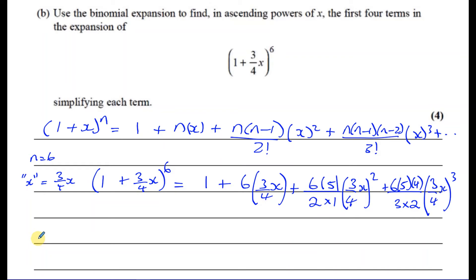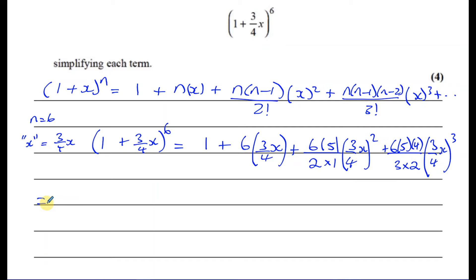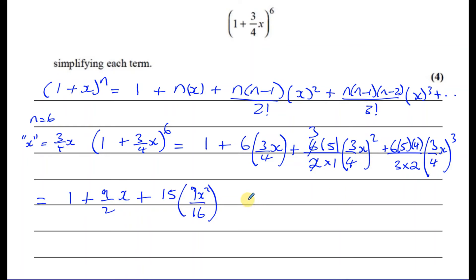The fourth term is (6×5×4)/3! × (3/4x)³, where 3! = 3×2×1 = 6. Now simplifying: for the second term, 6 and 4 cancel leaving 3/2, giving (9/2)x. For the third term, squaring (3/4x) gives 9x²/16, and 6×5/2 = 15, so the third term is 135x²/16.